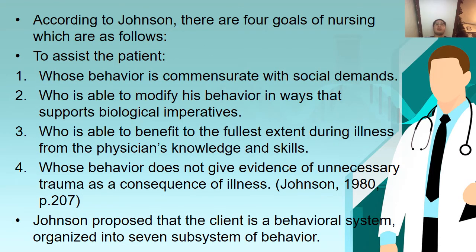According to Johnson, there are four goals of nursing. To assist the patient: first, whose behavior is commensurate with social demands; second, who is able to modify his behavior in ways that support biological imperatives; third, who is able to benefit to the fullest extent during illness from the physician's knowledge and skills; fourth, whose behavior does not give evidence of unnecessary trauma as a consequence of illness.